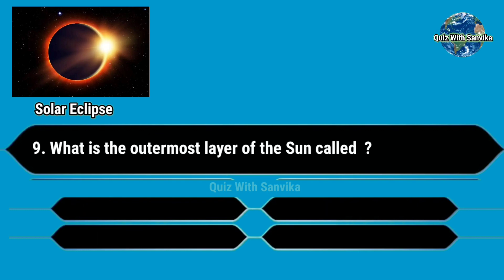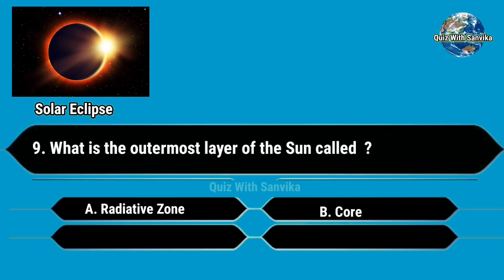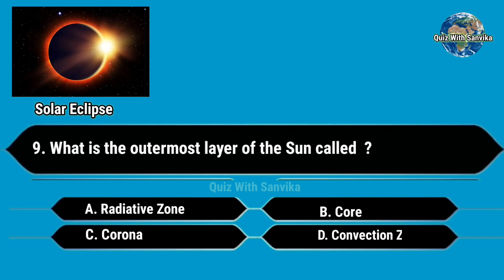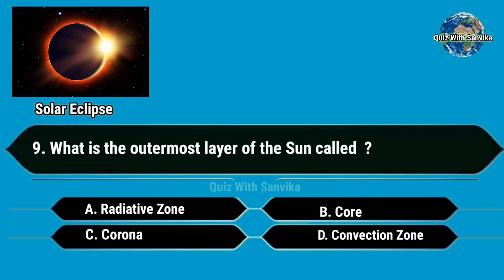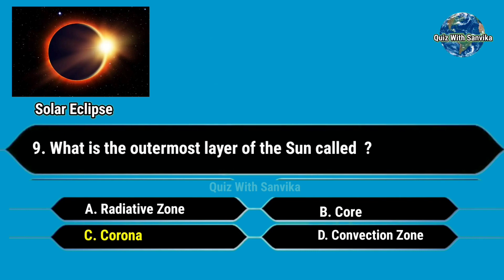What is the outermost layer of the sun called? Options are A. Radiative zone, B. Core, C. Corona, and D. Convection zone. Answer is C. Corona.